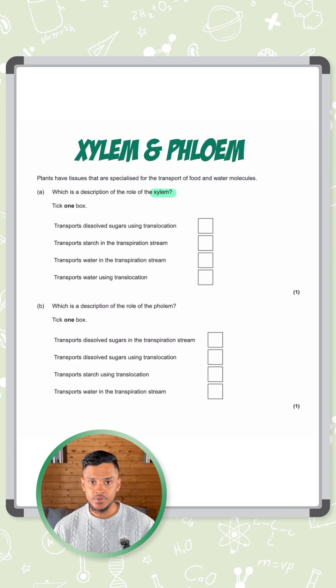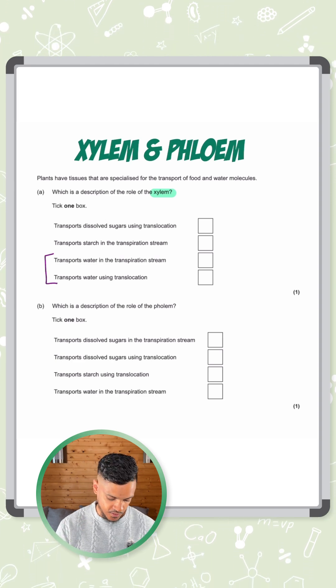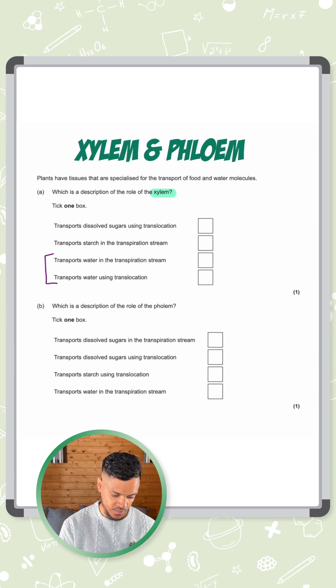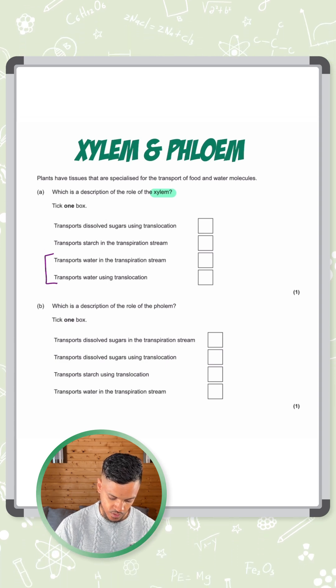The xylem transports water. The phloem transports sugars. So the second part of the question is asking you for the role of the phloem.